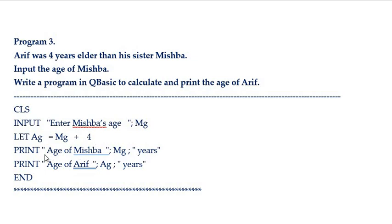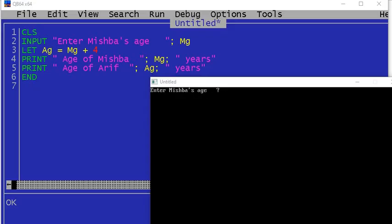So, the printing of Mishba's age will be this, and the printing of Arif's age will be this. Now comes the program in QBasic. If you look at the output of the program, the program at your screen should be visible to you.